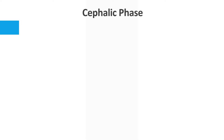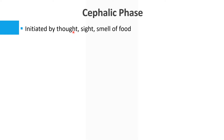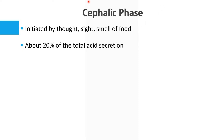The cephalic phase occurs as soon as we see or smell food — there is salivation as well as release of gastric secretions. It is initiated by the thought, sight, and smell of food, and about 20% of the total gastric acid secretion occurs during the cephalic phase. It is mediated by the vagus nerve.